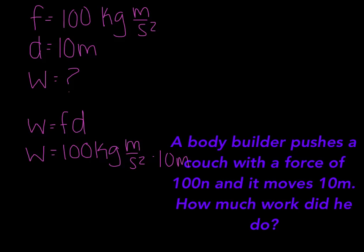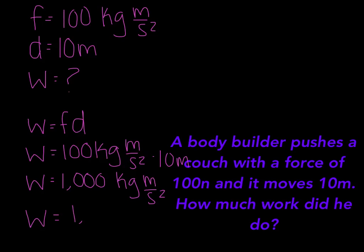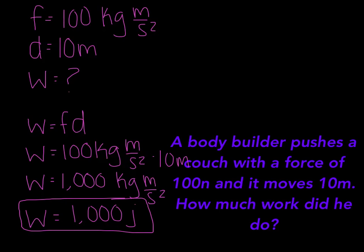Work equals — you do the multiplication again: 100 kilograms times meters over seconds squared, times 10 meters. So your answer is 1,000 kilograms meters over seconds squared. You have to turn that into joules, so your answer would be 1,000 joules. Box or circle your answer. That is your answer for this problem.